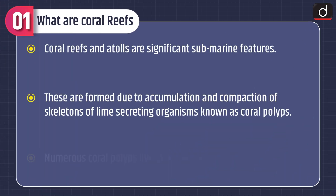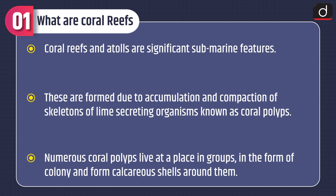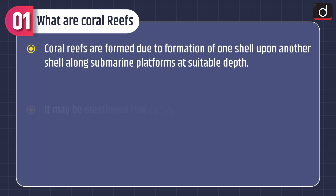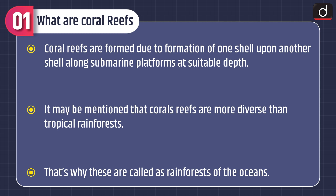Now let's know what are coral reefs. Coral reefs and atolls are significant submarine features. These are formed due to accumulation and compaction of skeletons of lime-secreting organisms known as coral polyps. Numerous coral polyps live in groups in the form of a colony and form calcareous shells around them. Coral reefs are formed due to formation of one shell upon another along submarine platforms at suitable depth. It may be mentioned that coral reefs are more diverse than tropical rainforests, which is why these are called the rainforests of the oceans.